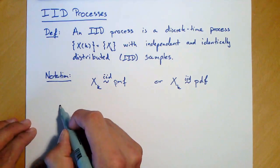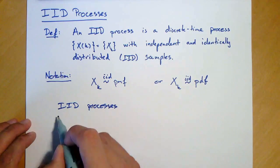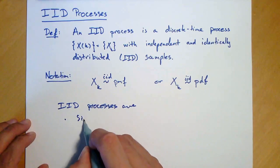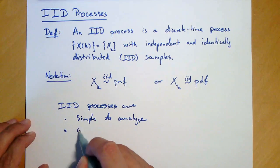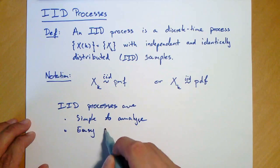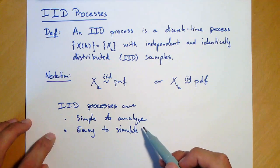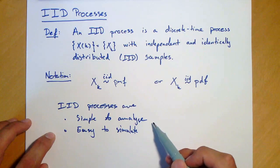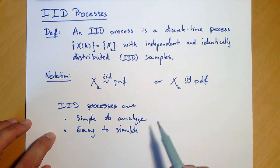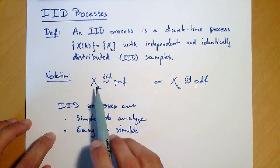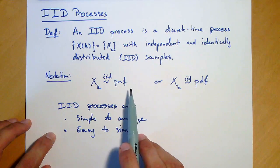IID processes are simple to analyze. They are also easy to simulate. It's simple to analyze processes where samples are independent. That simplifies a lot. They are also easy to simulate exactly due to the fact that you can simulate each sample in the same way, that is that they are identically distributed, but also independently of other samples.